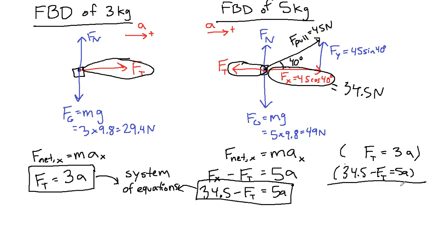And then we add everything on the left side. So 34.5 minus tension plus tension.